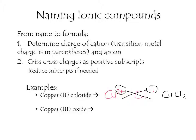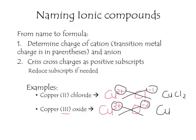Now let's try copper(III) oxide. We know the charge of copper is indicated by the Roman numeral, so copper is 3+. Oxide is oxygen, and on the periodic table oxygen has a minus 2 charge. Applying the crisscross rule and bringing the numbers to the subscript, we end up with Cu2O3. This is copper(III) oxide.